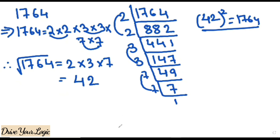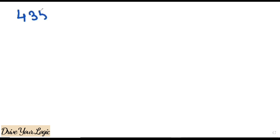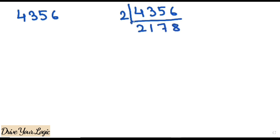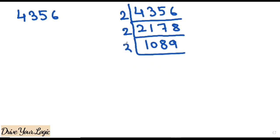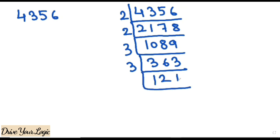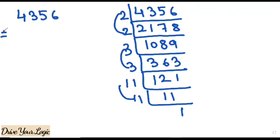Let's do one more example so it will be clearer. The final number is 4356. Now for prime factorization: 2 into 2178, 2 into 1089. Then 3 into 363, 3 into 121. And 121 is 11 × 11 — yes, 11 squared. 11 into 11, 11 into 1.